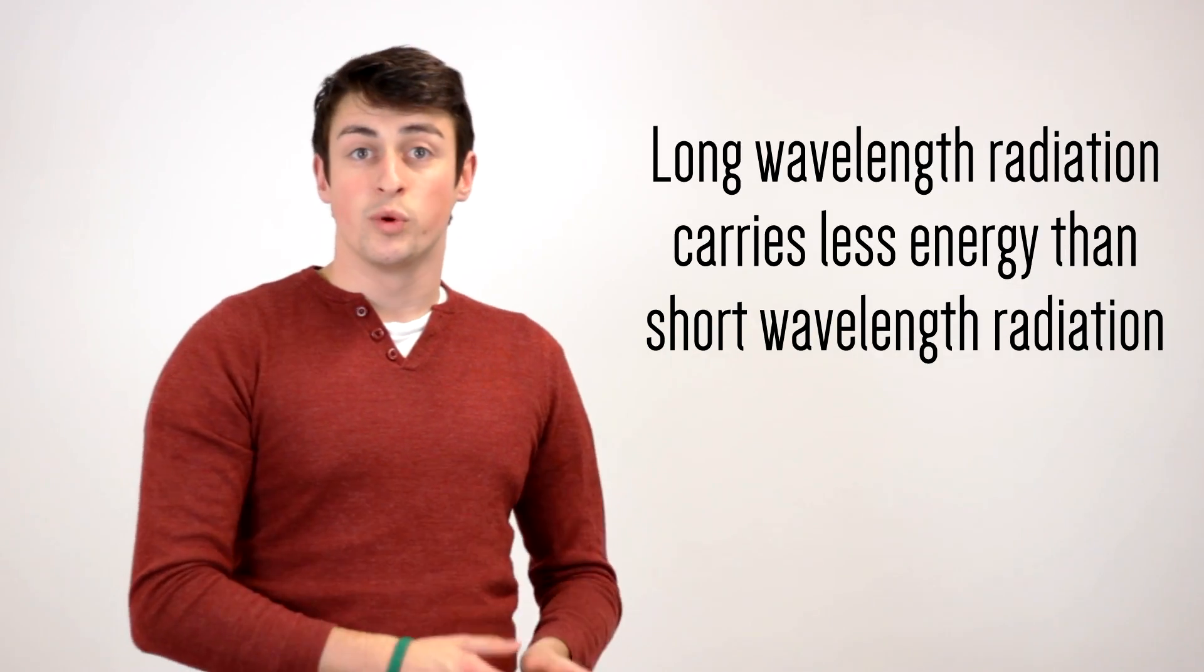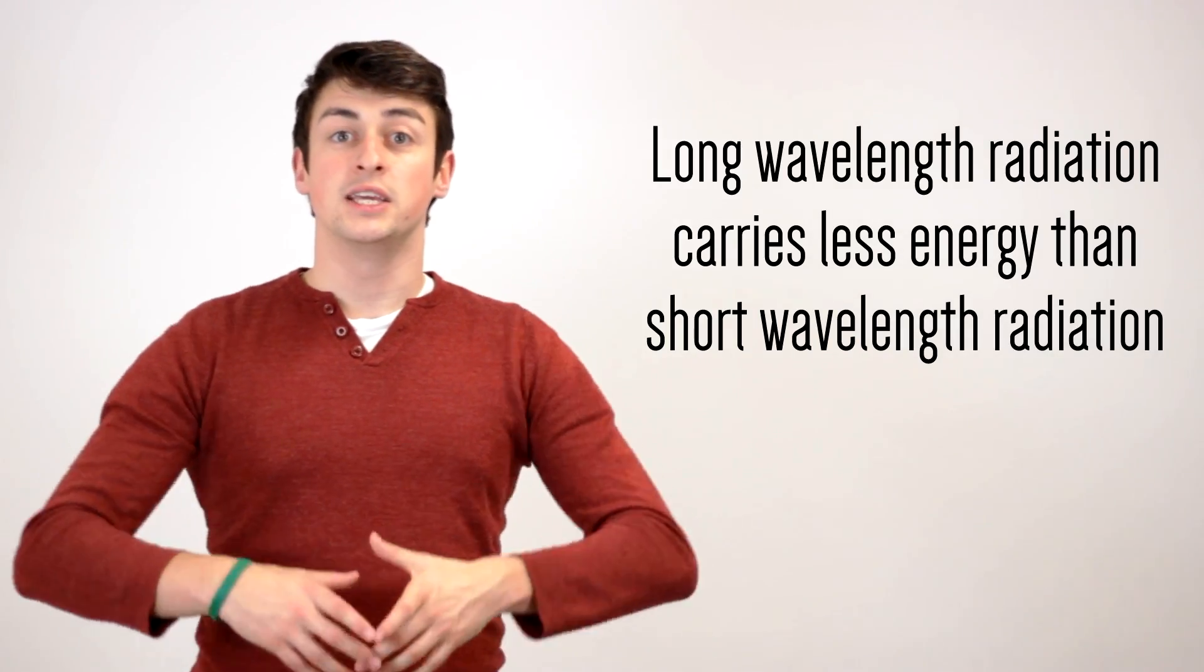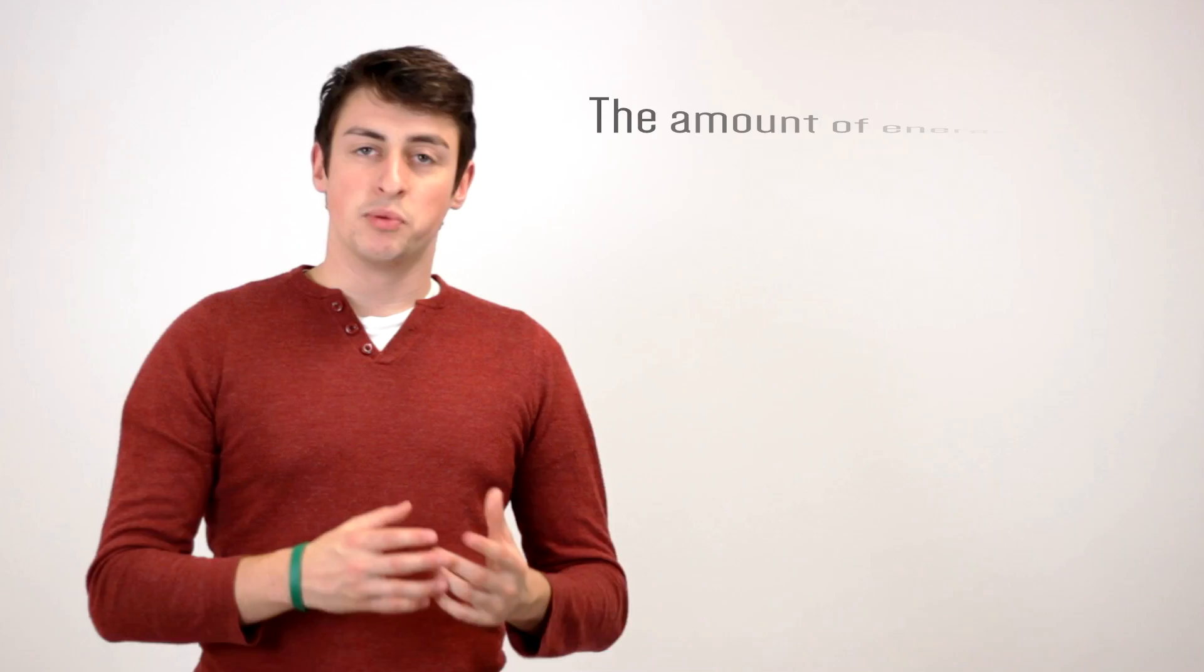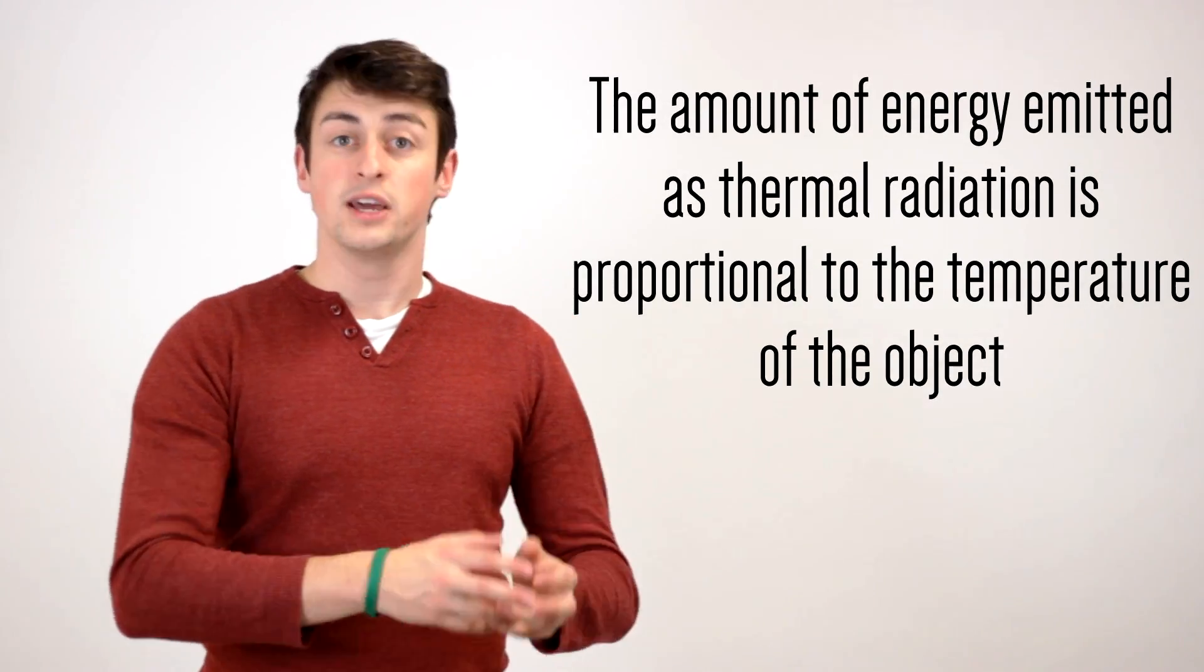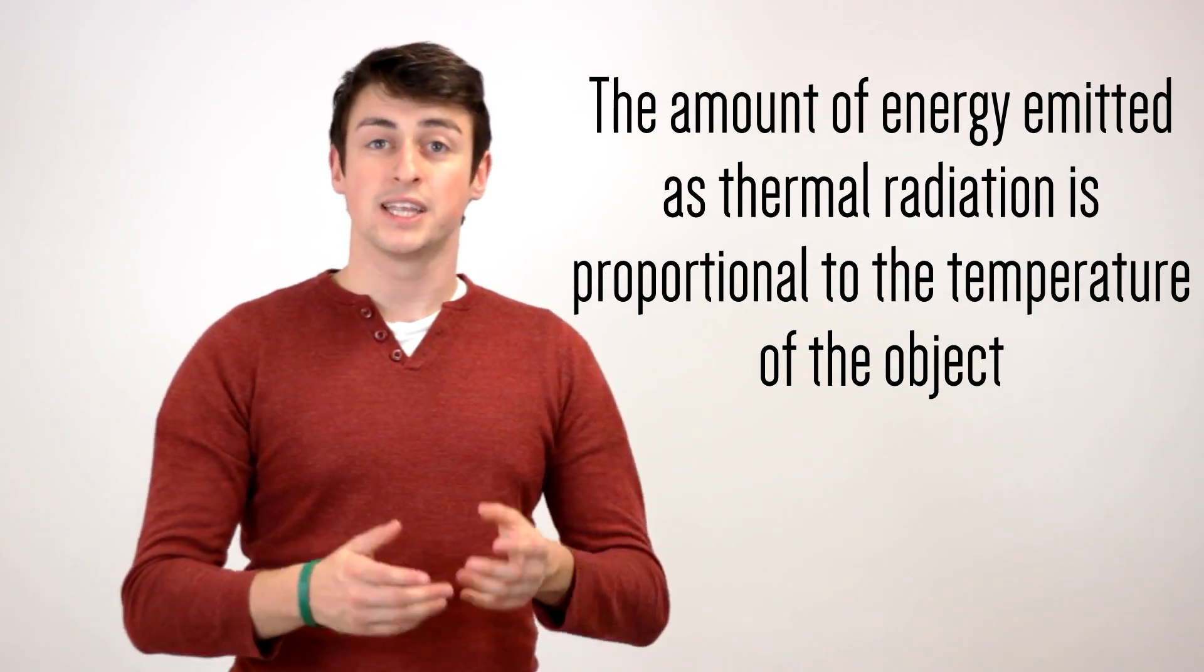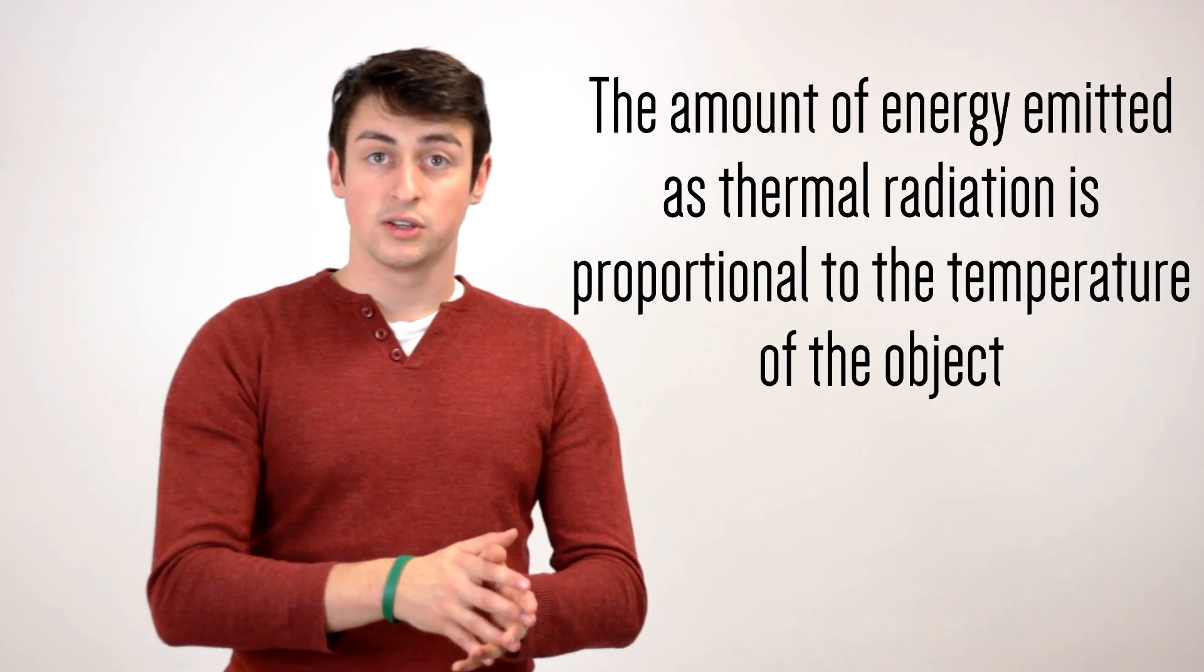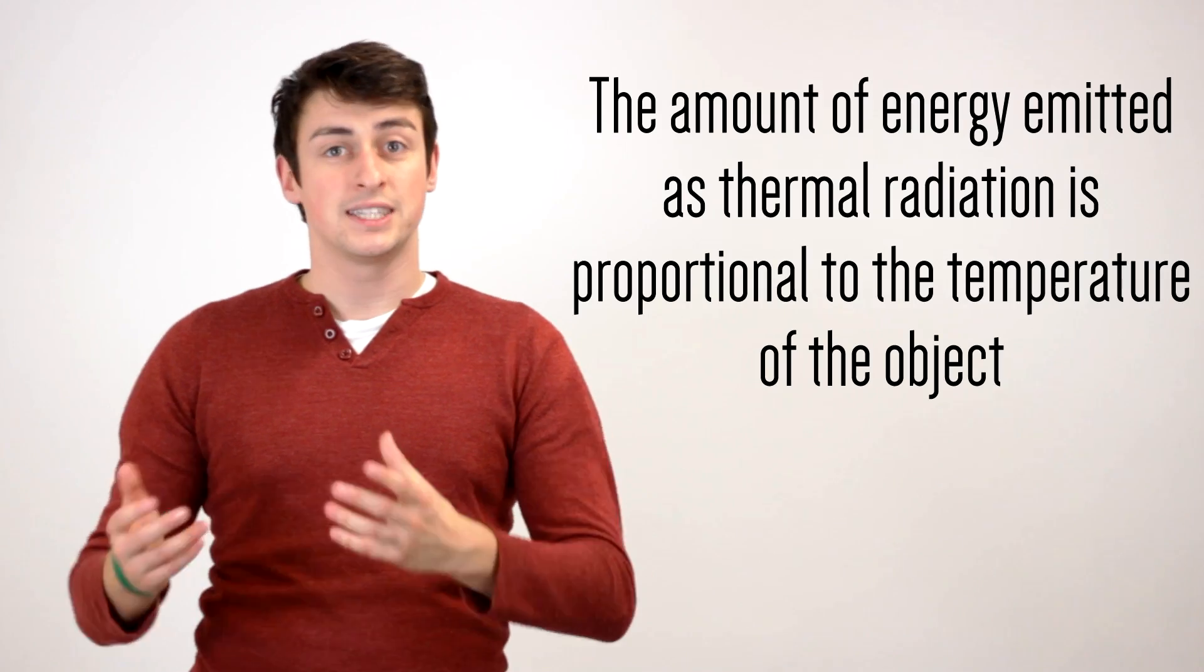Now, this is because longer wavelength radiation carries less energy than short wavelength radiation. And the amount of energy that an object gives out due to thermal radiation is proportional to how hot it is. So the sun is very hot, it emits a lot of energy, and so it emits that energy primarily at shorter wavelengths, where the Earth, which is much cooler than the sun, emits less energy and so transmits it at longer wavelengths. And while the short wavelength radiation given off by the sun passes straight through the atmosphere from the top down to the surface, the Earth's radiation that gets emitted, which comes from the surface and goes through the atmosphere and out into space, gets a much rougher treatment. Because it turns out that the Earth's atmosphere is very good at absorbing long wavelength radiation.